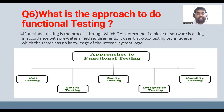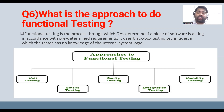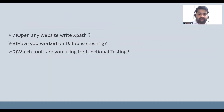The next question: what is the approach to do functional testing? Functional testing is the process through which QA determines if the software is acting in accordance with predefined requirements. It uses a black-box testing technique — testers have no knowledge of internal system logic. The approach includes: unit testing done by developers, followed by smoke testing, sanity testing, integration testing, and usability testing.